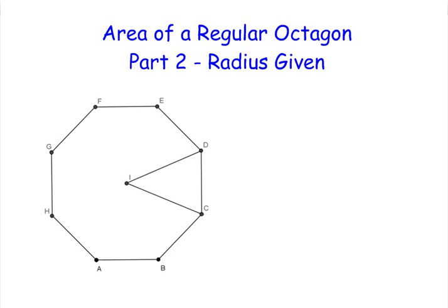Let's use a specific example first. Say the radius is 4. This gives us a nice isosceles triangle, which is helpful.